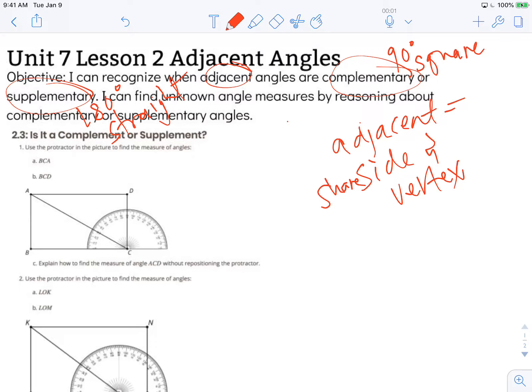We're looking at activity 2.3: Is it a complement or a supplement? Number 1 says, use the protractor in the picture to find the measure of the angles. Angle BCA, which is right here, and angle BCD.